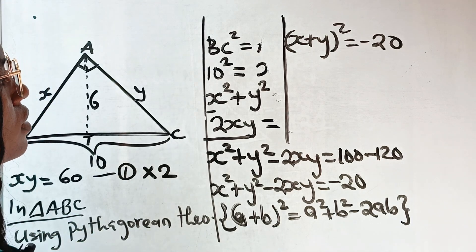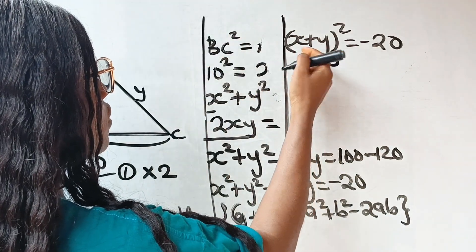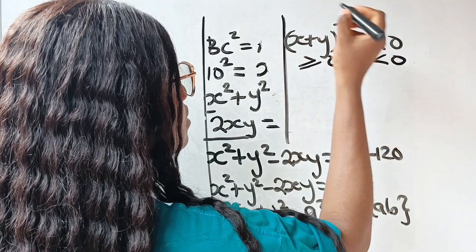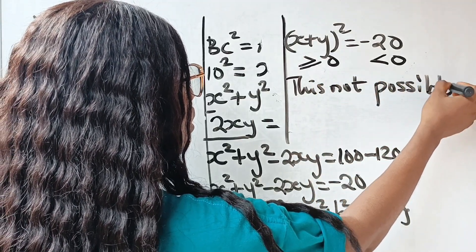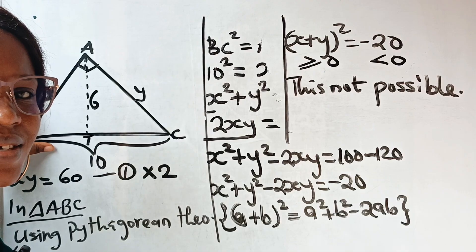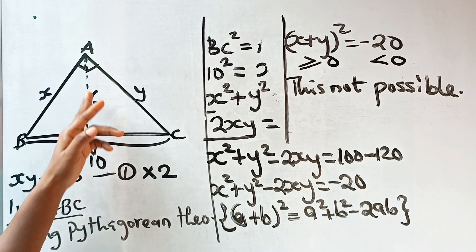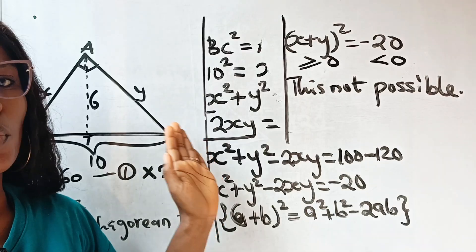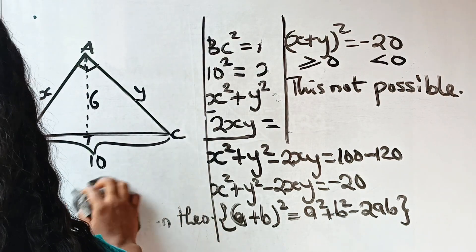Now notice that (x − y)² must be greater than or equal to zero, because even a negative value squared gives a positive number. But here we have it equal to −20, which is less than zero. This is not possible. It means this triangle cannot be drawn — a right triangle with hypotenuse 10 and height 6 does not exist. That is Method 1. Now let's use the second method, which is faster and more direct.